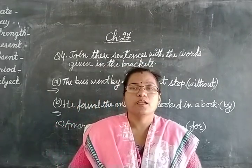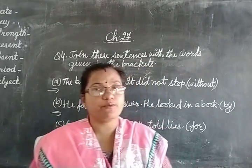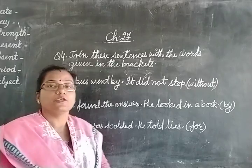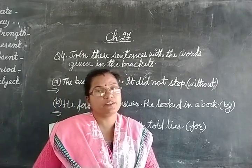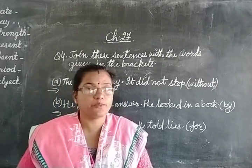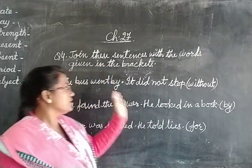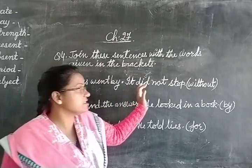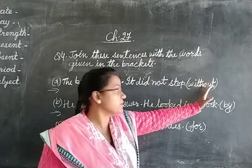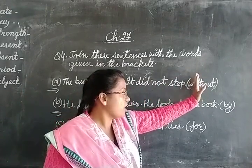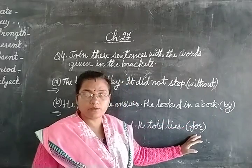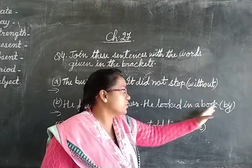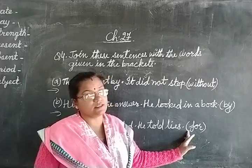Good morning children. Let us do question number 4 in chapter 27. Join these sentences with the words given in the bracket. Now there are 4 sentences. We have to make one single sentence and we have to use the words without, by, and for. In all the questions these words are there, so we will use these words to join the sentences.